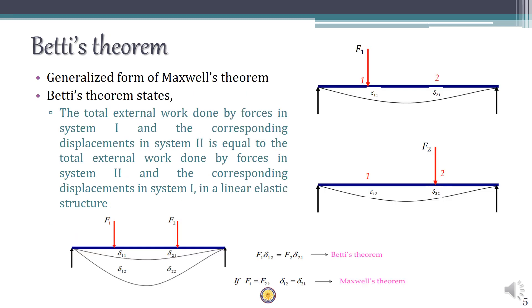Now let's see what Betti's theorem is. Betti's theorem is a more generalized version of Maxwell's theorem, and Maxwell's theorem can be derived from it. Betti's theorem states that the total external work done by forces in system 1 acting through the corresponding displacements in system 2 is equal to the total external work done by forces in system 2 acting through the corresponding displacements in system 1, in a linear elastic structure.